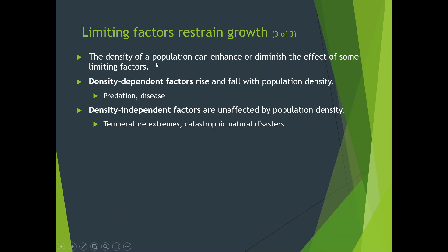Limiting factors restrain population growth. Population density can enhance or diminish some of these factors. Density-dependent factors rise and fall with population density — for example, more population brings in more predators, and disease spreads more easily when individuals are packed together, just like everyone getting strep throat in the dorms after spring break. Density-independent factors are unaffected by population density — things like extreme temperatures or catastrophic natural disasters that are outside the population's control.